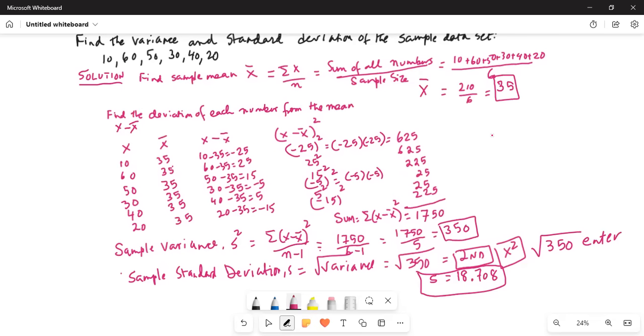Once I found the sample mean, I found the deviation of each number from the mean. The deviation is given by each number minus x̄. How far each number is located away from the mean, which is x minus x̄. Then I squared the deviations.